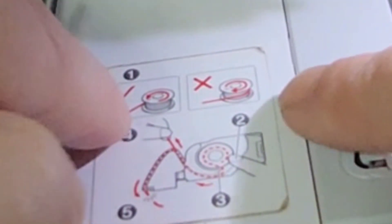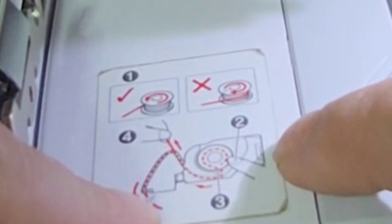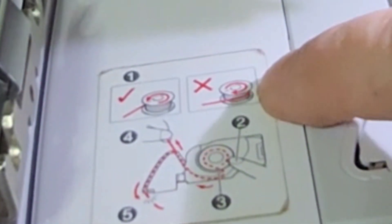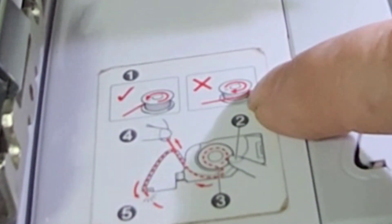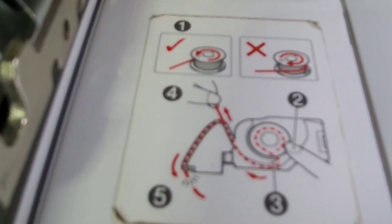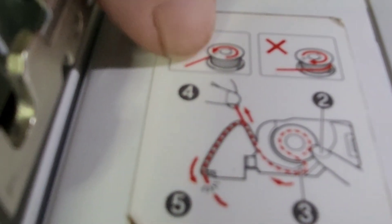When you first open your machine and you look, you see how to install the bobbin. I myself saw this one first with the arrow, didn't realize the X there because I was so excited to get the machine going.